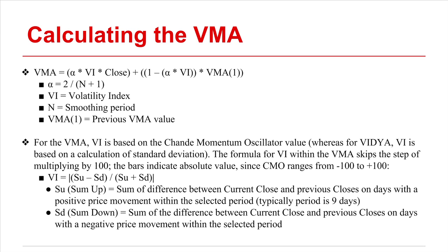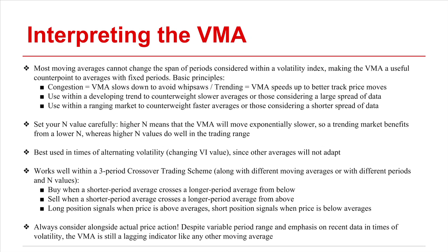The typical period is 9 days. The crucial concept when interpreting the variable moving average is that most moving averages cannot adjust the span or the weight of periods considered in the way that the VMA does based on the volatility index.